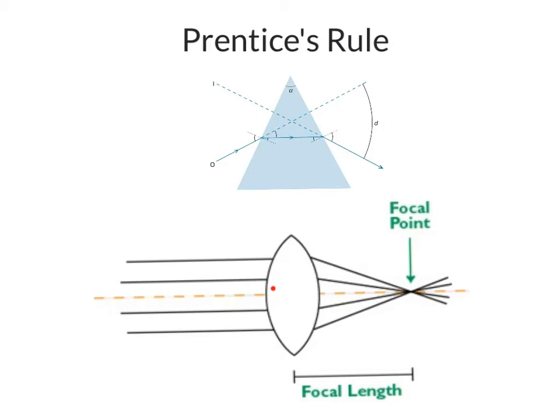Any light ray that is away from the optical axis has a prismatic effect. And the further away the ray is, the light ray, then you have a more prismatic effect.